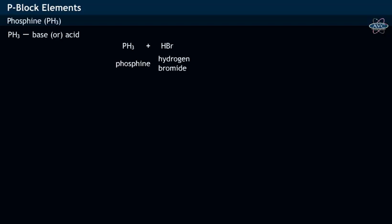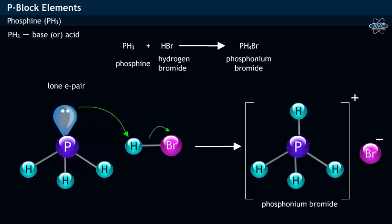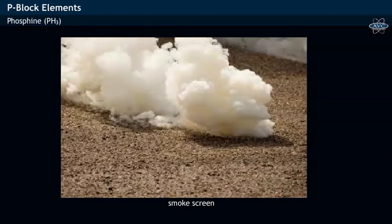When hydrogen bromide is added to phosphine, it results in the formation of phosphonium bromide salt (PH₄Br), an ionic compound. In this reaction, the lone electron pair on the central phosphorus atom in phosphine is donated to the electron-deficient hydrogen of hydrogen bromide, thereby resulting in the formation of phosphonium salt. Hence, phosphine, being an electron pair donor, acts as a weak Lewis base.